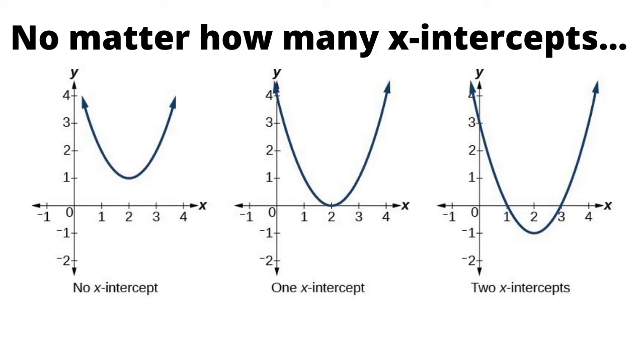In the first episode of this series, we looked at x-intercepts and the possible outcomes we could have when looking at a quadratic, which you can see here is either no x-intercepts, 1, or 2.